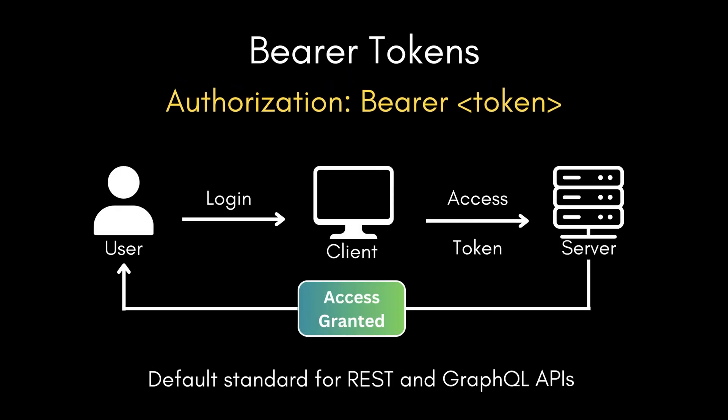Next comes bearer tokens. Instead of sending a username and password every time, the client first authenticates once and receives a token. From then on, every request carries that token in the authorization header. The server simply checks if the token is valid — access granted — and if not, it responds with access denied. This is stateless; the server doesn't need to remember sessions, which makes it fast and scalable.